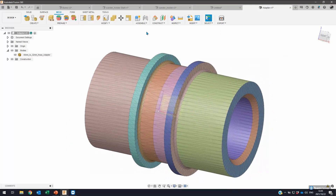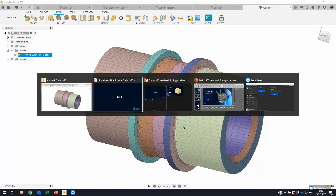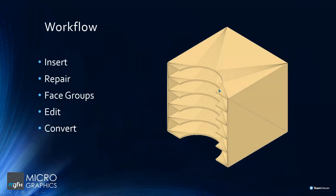I want to do a quick recap on the workflow. If you are wanting to take a mesh and convert it back to a solid: you would insert the mesh, make sure that your scaling is correct, run a repair to fix any issues with the mesh, use the face groups option to create various face groups to help identify the different faces, edit the mesh as needed, and then convert mesh to solid. Then do any solid modeling from there.